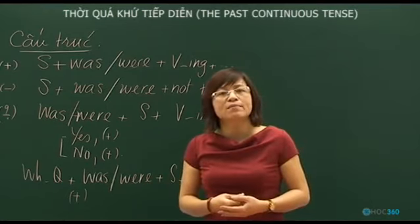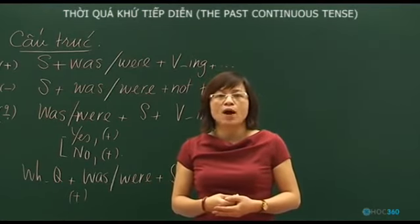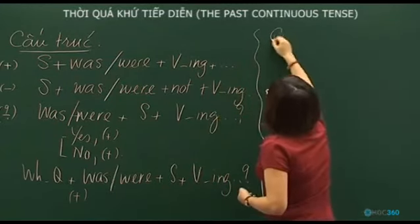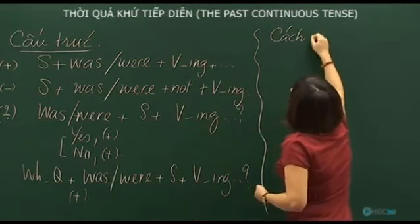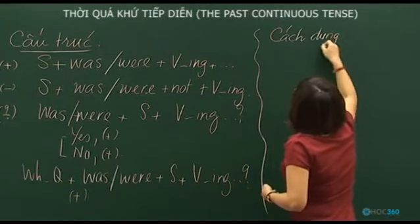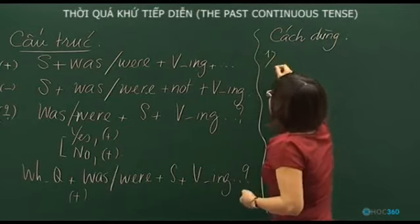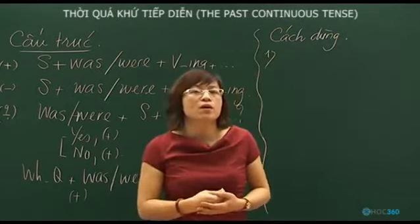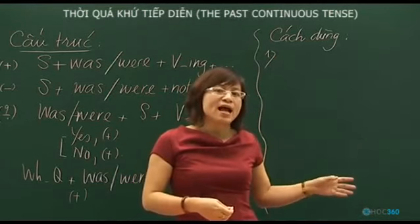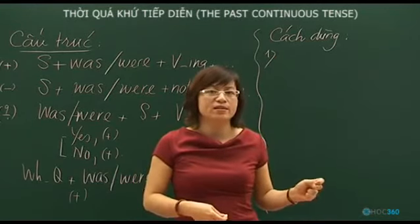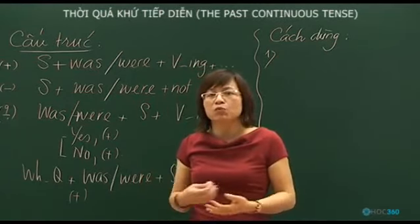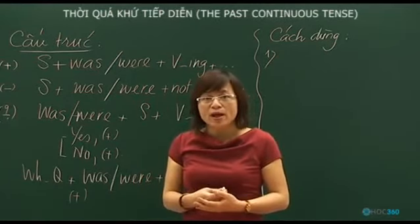Now let's look at how to use the past continuous. Usage 1: The past continuous describes an action that was happening at a specific point in time in the past. For example, two hours ago, we were reading a business book.